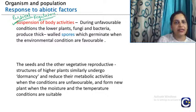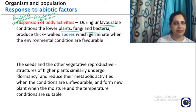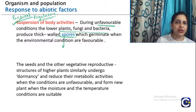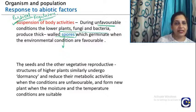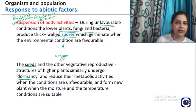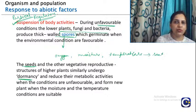The second category of partial regulators is suspension of body activity. During unfavorable conditions, some organisms like lower plants, fungi, and bacteria form thick spores and exist in this form, germinating during favorable conditions when there is the right atmosphere, moisture, and temperature. Another example of suspension is dormancy in seeds — when oxygen, moisture, and temperature are not right, the seed goes into an inactive dormant state.